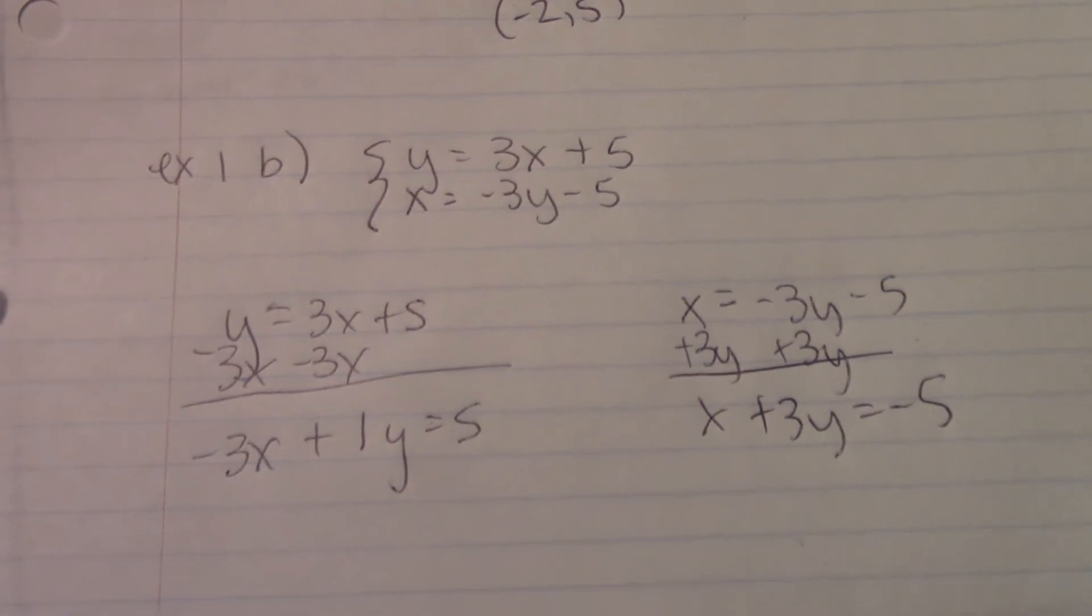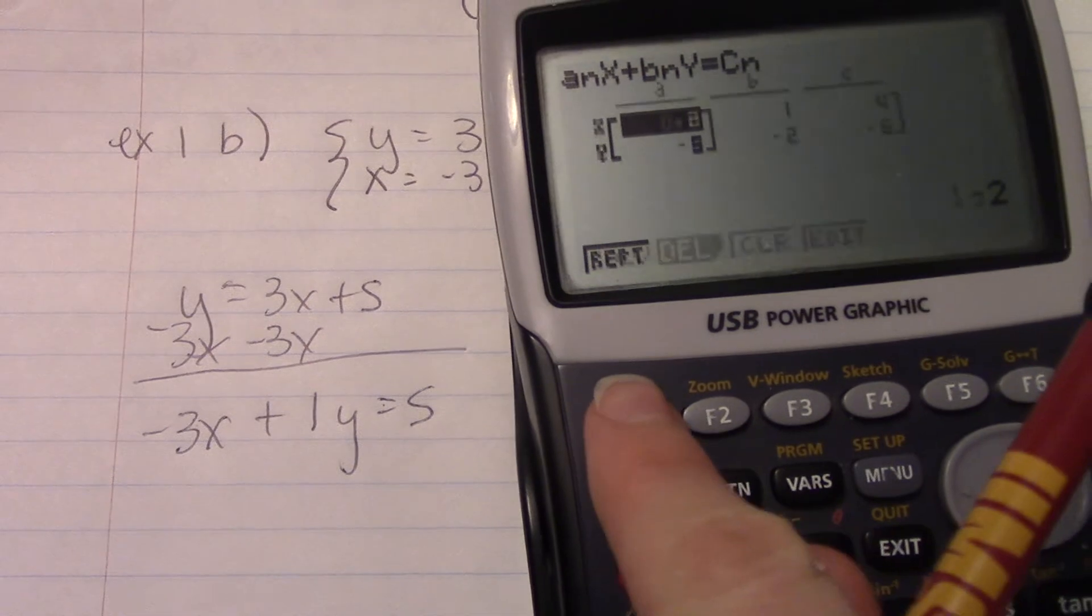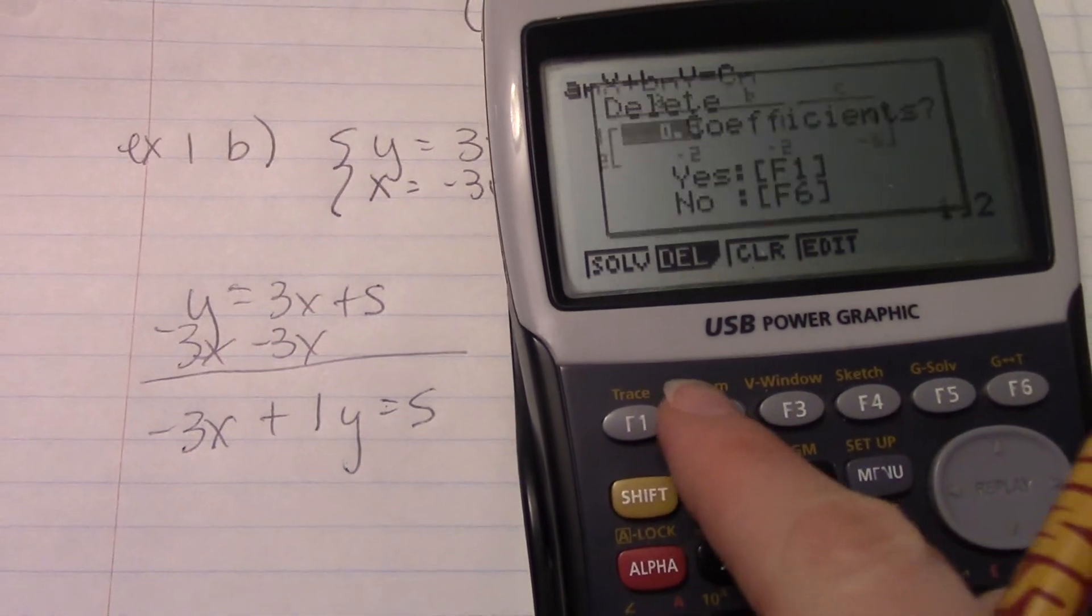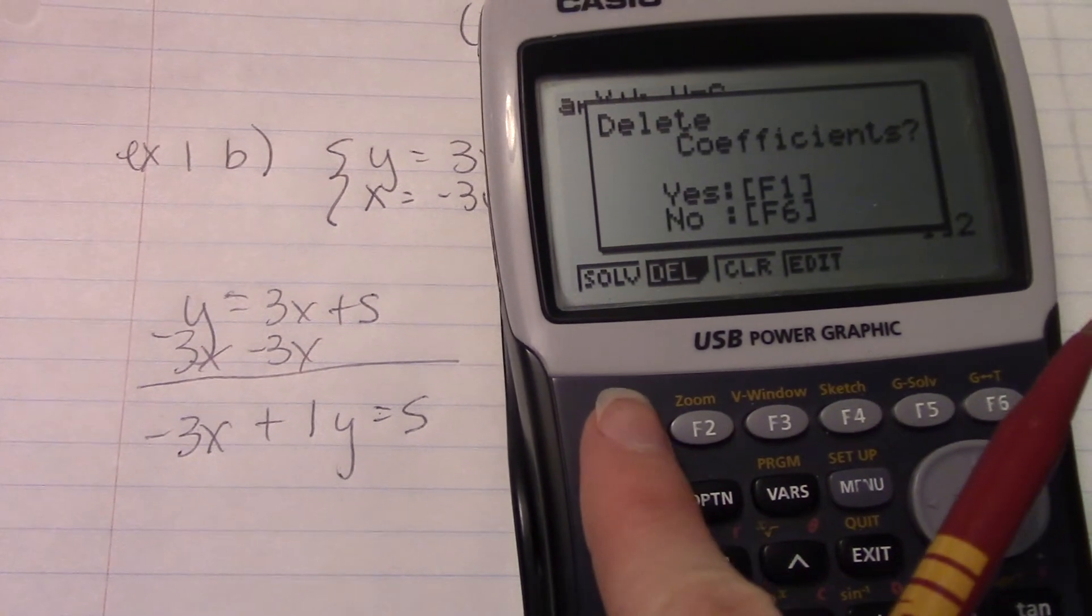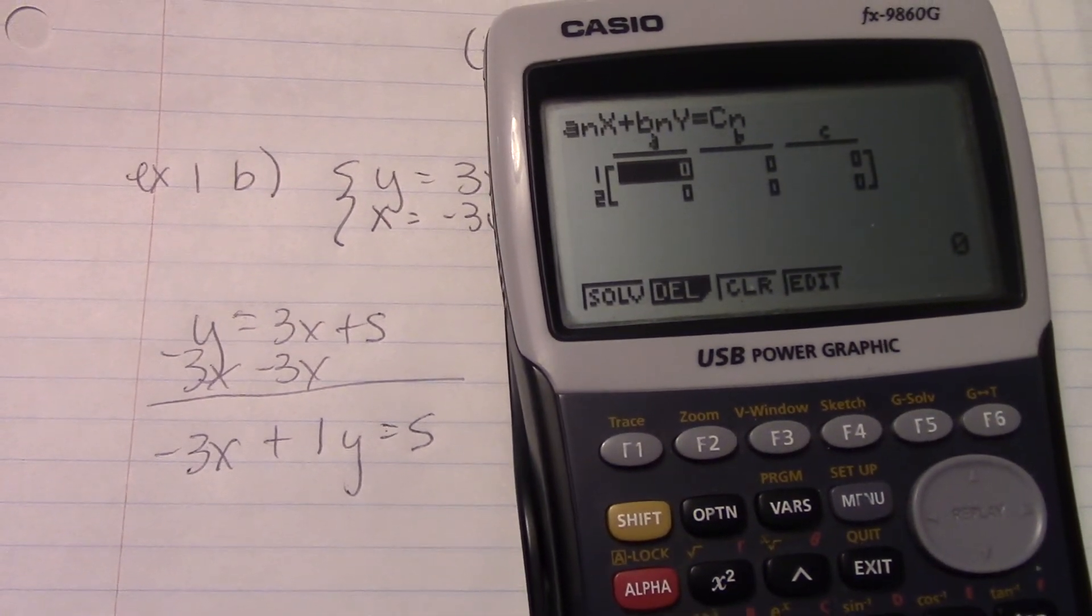Now we are going to plug these two in. So, if I hit F1 again, it goes back to the screen. I can hit delete. And then F1, that makes everything go away. So, number of unknowns is 2.